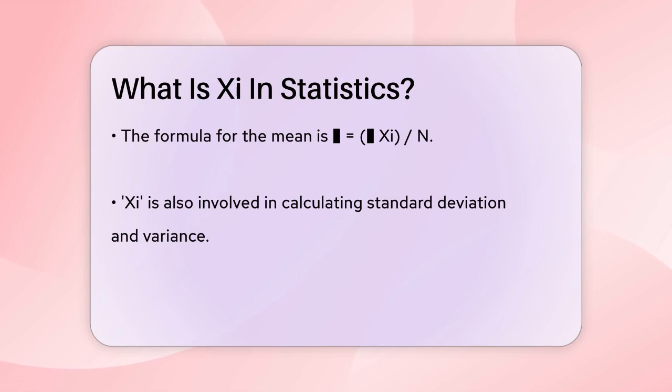The formula for the mean is μ = Σ Xi / N, where μ is the mean, Σ Xi is the sum of all the data points, and N is the total number of data points.